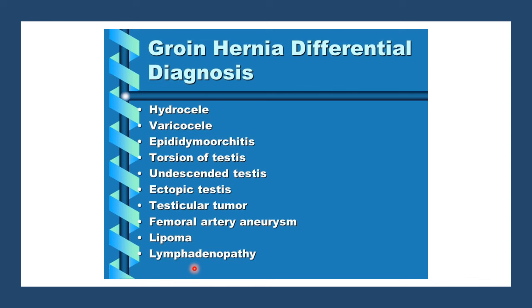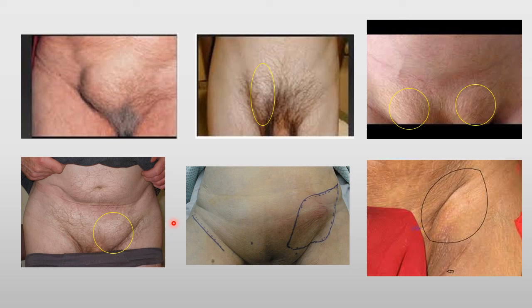These pictures illustrate some groin swellings. This is a case of a groin swelling — clinically, this can be an irreducible inguinal or femoral hernia, most likely inguinal because it is above the inguinal ligament. Or it can even be a lymph node or a lipoma. Here is an elongated lump from the inguinal region extending to the upper scrotum — most probably it is an indirect inguinal hernia.